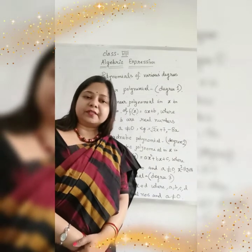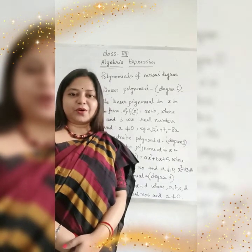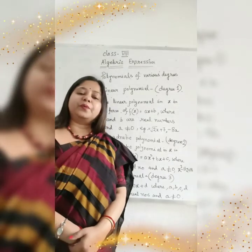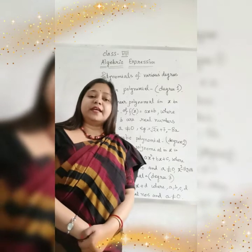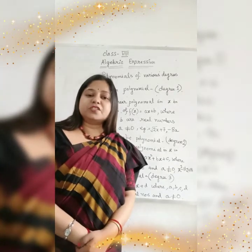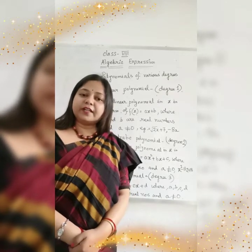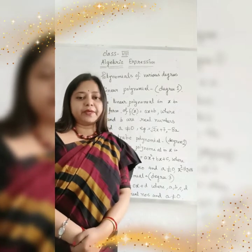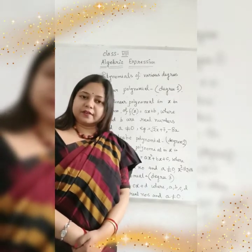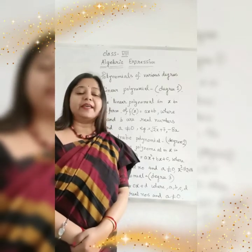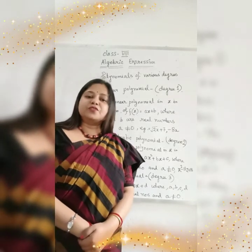Let's take an example of quadratic polynomial. Quadratic polynomial means when the variable has maximum power of 2, that is called quadratic polynomial. Suppose I take the example 2x square minus 4x plus 7. In this expression you can see that 2x square means the highest power of x is 2. So the expression is called quadratic polynomial and a, b, and c are real numbers, and a is not equal to 0.